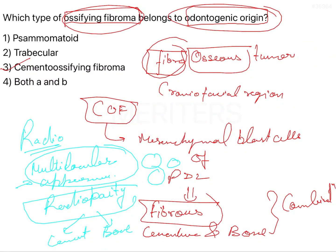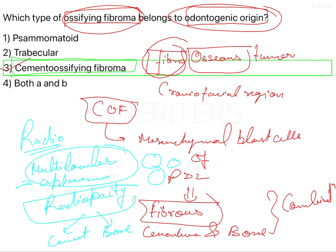Coming back to the question: cemento-ossifying fibroma, also referred to as the ossifying fibroma according to the newer WHO classification, is going to be of odontogenic origin. So the answer is option 3 in this particular case.